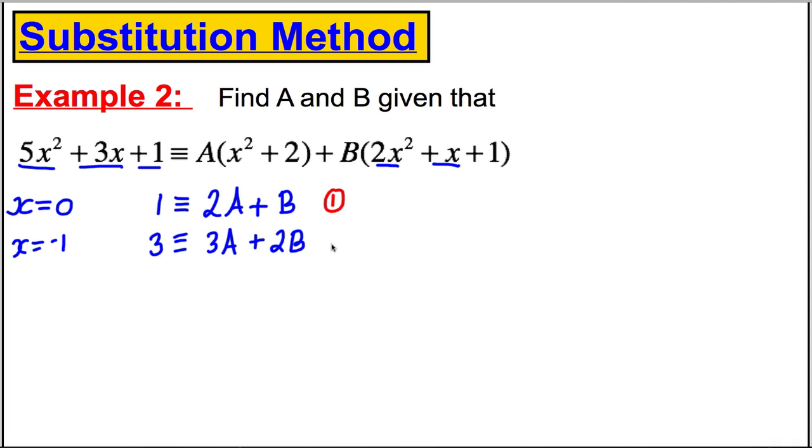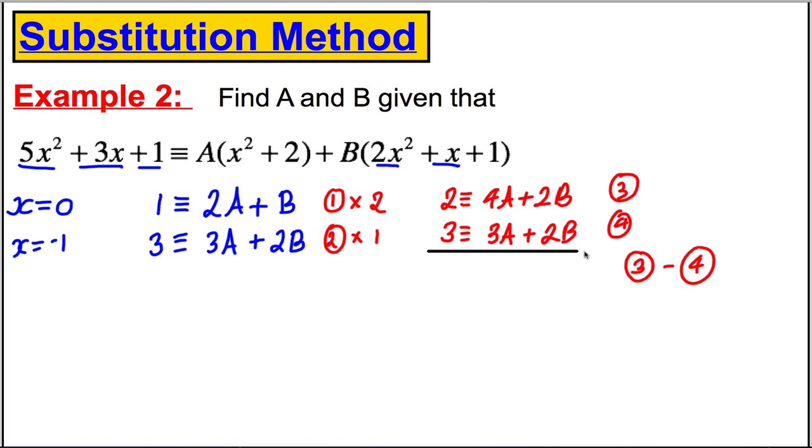So if I called this one equation 1 and this one equation 2, if I multiplied equation 1 by 2 and kept this equation the same, so just multiplied by 1, I would get 2 is identical to 4A plus 2B. And I would get here, as I had before, 3 is identical to 3A plus 2B. I could call that equation 3 and 4. If I took equation 3 and subtracted equation 4 from it, so I'm going to take these away.